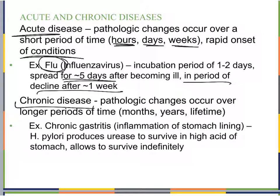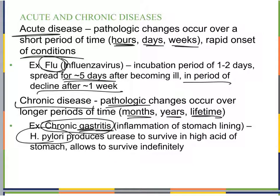A chronic disease involves pathologic changes over a longer period — months, years, or an entire lifetime. For example, chronic gastritis caused by H. pylori: the bacterium produces urease to survive in the high acid of the stomach, creating an environment favorable to itself, making it very difficult to eradicate once it has infected.